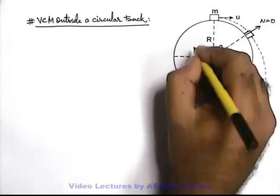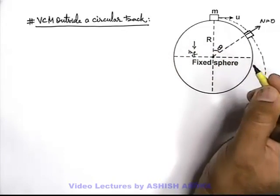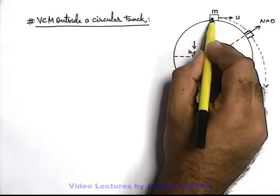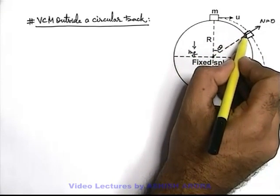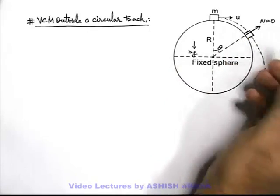It is obvious that as mg is acting in downward direction, as the body moves along the spherical track or the circular track, its speed will increase.